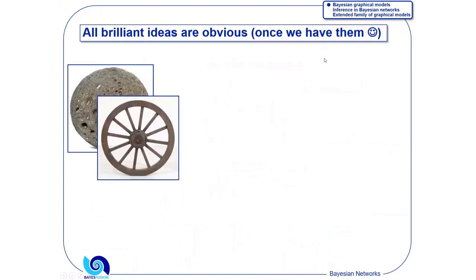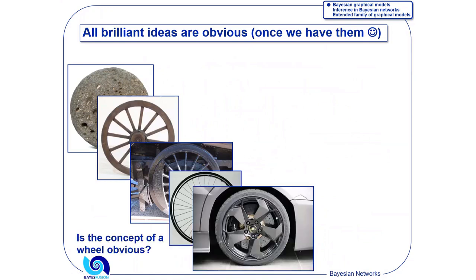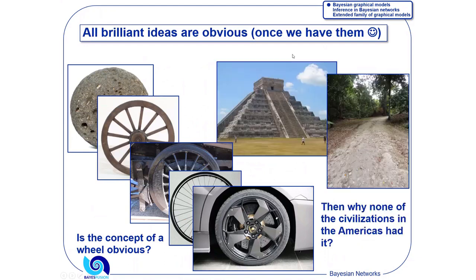Brilliant ideas are obvious once you have them. Of course, it's an obvious idea to use independences. We sometimes say somebody rediscovered the wheel. What we mean by that is he discovered an obvious idea. We knew about it already. So it's an obvious idea. It is obvious because we have it, we have the wheel.